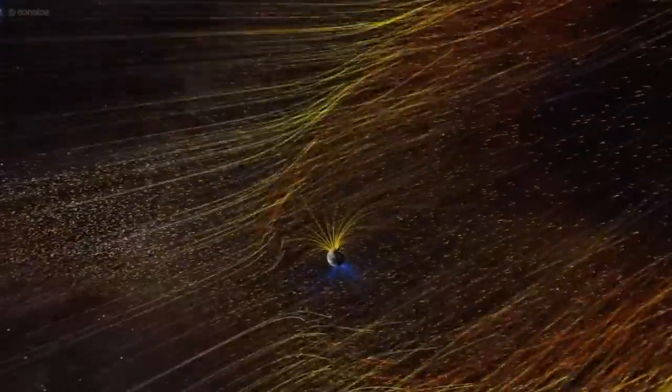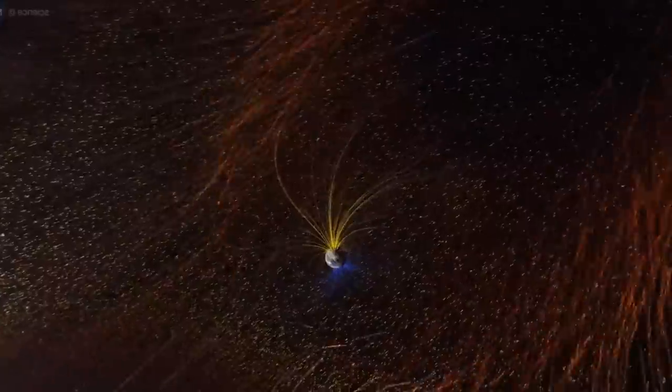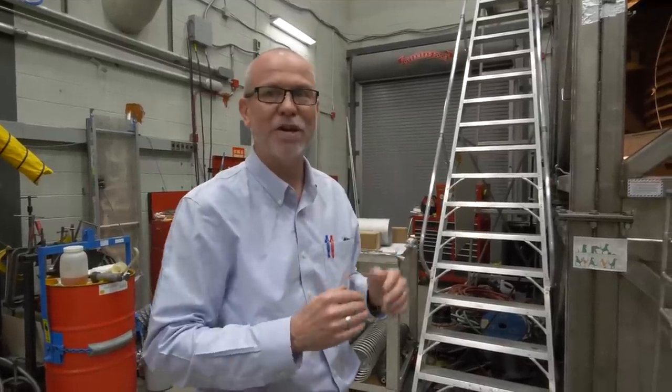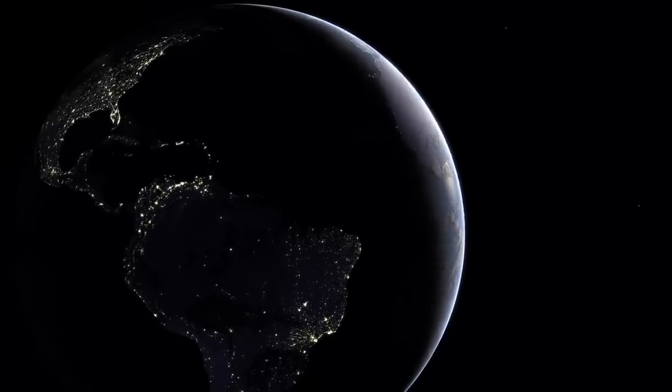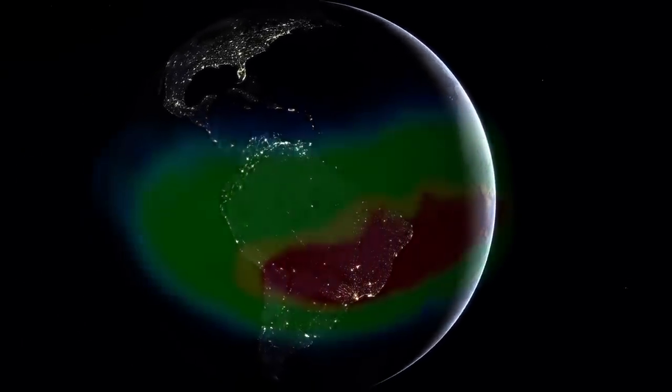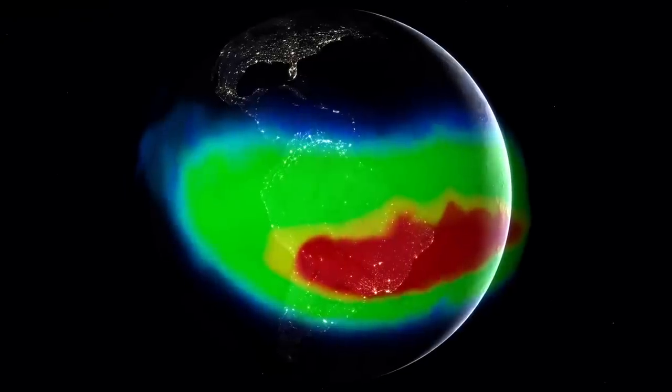But lately, that shield appears to be weakening. So the Earth's magnetic field has dropped 10% in the last 170 years. We don't know why. There's a very weak spot of the Earth's magnetic field in the South Atlantic, the South Atlantic anomaly, that's growing weaker. We do know the Earth's magnetic field has reversed many hundreds of times in its history. We don't know where it's going now.